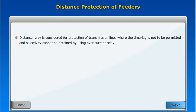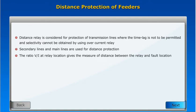Distance protection of feeders. A distance relay is considered for protection of transmission lines where time lag is not to be permitted and selectivity cannot be obtained by using an overcurrent relay. Secondary lines and main lines are used for distance protection. The ratio V by I at the relay location gives the measure of distance between the relay and the fault location.